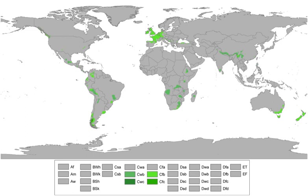The subtropical highland variety of the oceanic climate exists in elevated portions of the world that are within either the tropics or subtropics, though it is typically found in mountainous locations in some tropical countries. Despite the latitude, the higher altitudes of these regions mean that the climate tends to share characteristics with oceanic climates, though it also tends to experience noticeably drier weather during the lower-sun winter season.